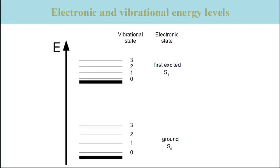We will now discuss an example where we consider the two subsystems of the electronic orbitals and the nuclear vibrations. The electronic energy is the sum of the energies of the electronic orbitals, and the vibrational energy is the sum of the energies of all nuclear vibrations. The figure shows a simple representation of the energy levels of the electronic ground state and the first electronically excited state, and of the vibrational levels in these states. The vertical axis is the total energy of the molecule. Shown are two electronic levels — the bold lines — and on top of those the vibrational levels.